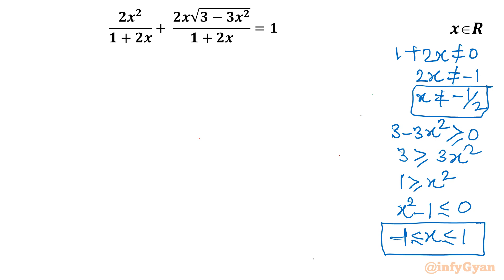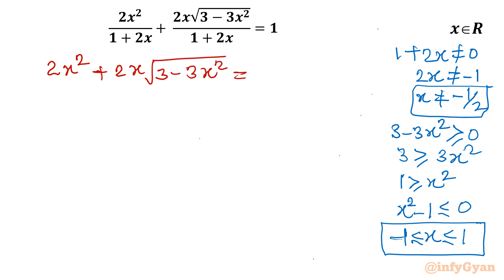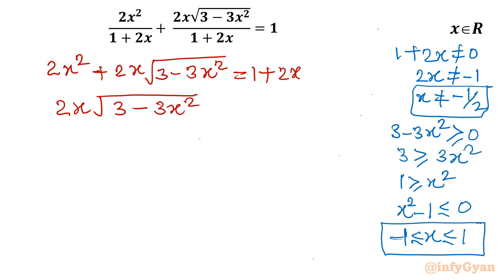Let's get started by taking the LCM. Multiplying through by (1 + 2x) gives 2x² + 2x√(3 − 3x²) − 3x² = 1 + 2x. Wait — actually after rearranging by taking 2x² from both sides: 2x√(3 − 3x²) = 1 + 2x − 2x².